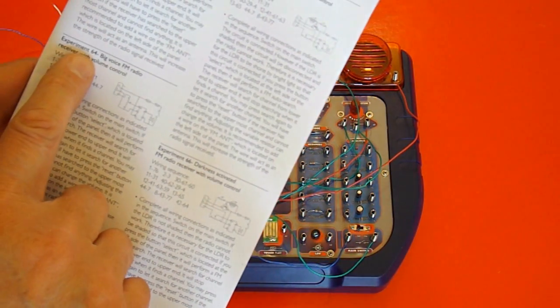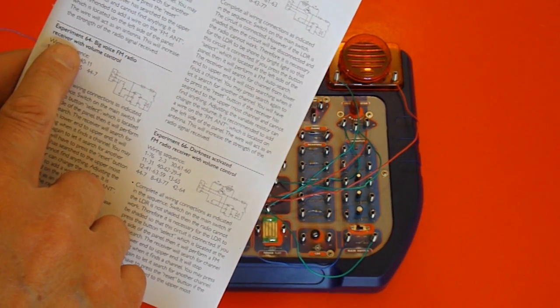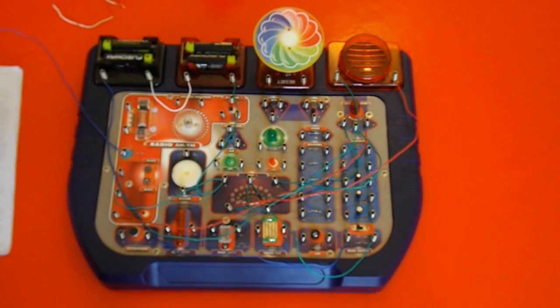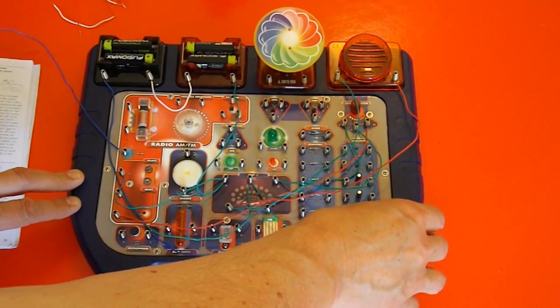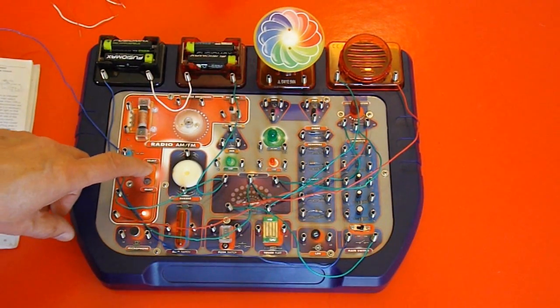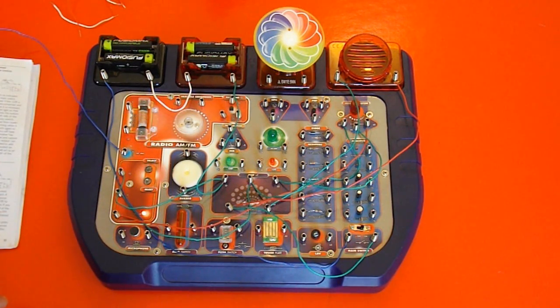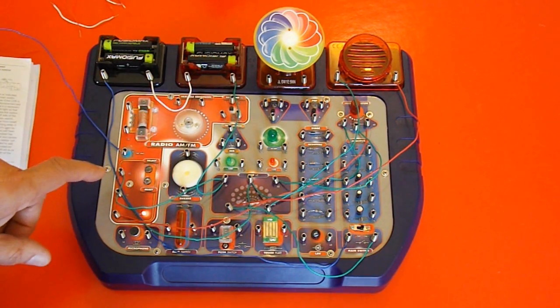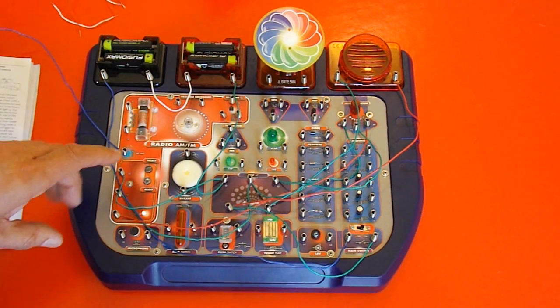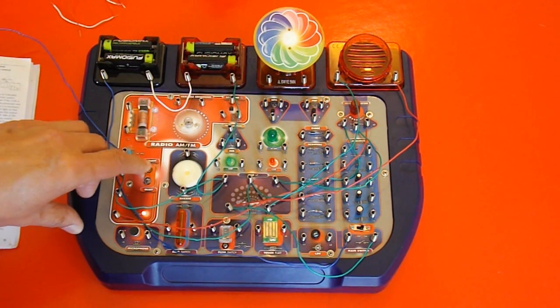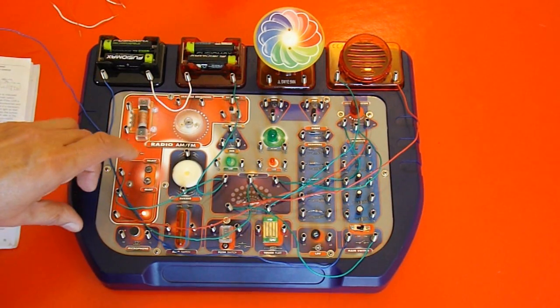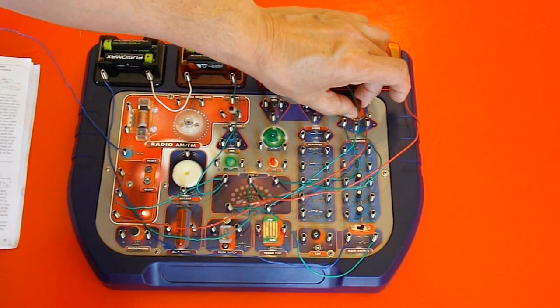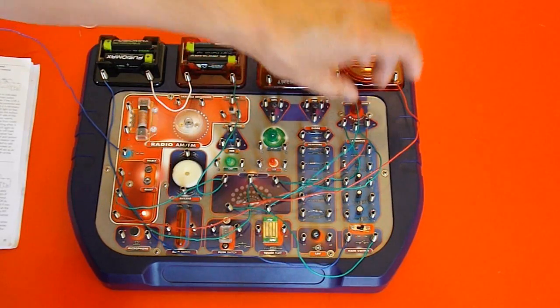Just did experiment 64, big voice FM radio receiver with volume control. That's actually got less wires than the one we did first of all. So, switch it on. Turn the sound down a bit. That's got excellent reception.